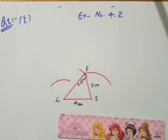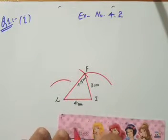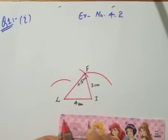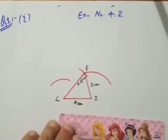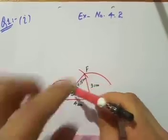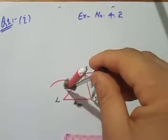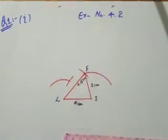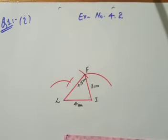Open the compass to 4 centimeters. Using I as center, draw an arc of radius 4 centimeters. The two arcs meet at a point.